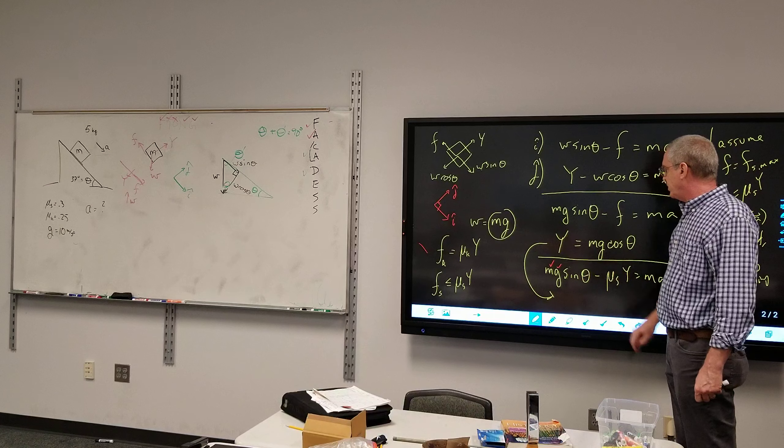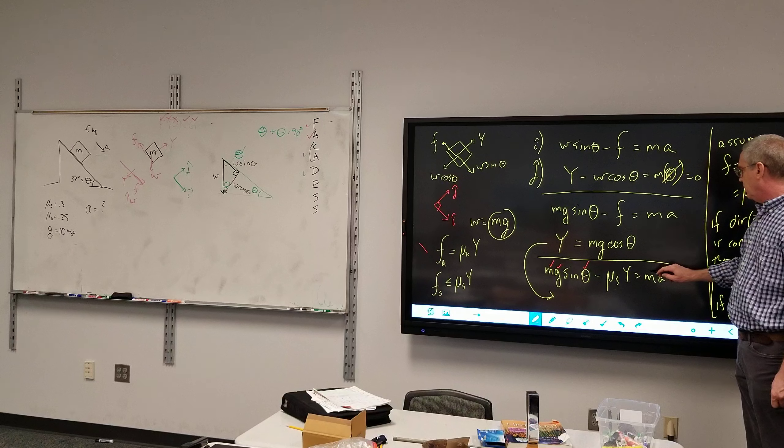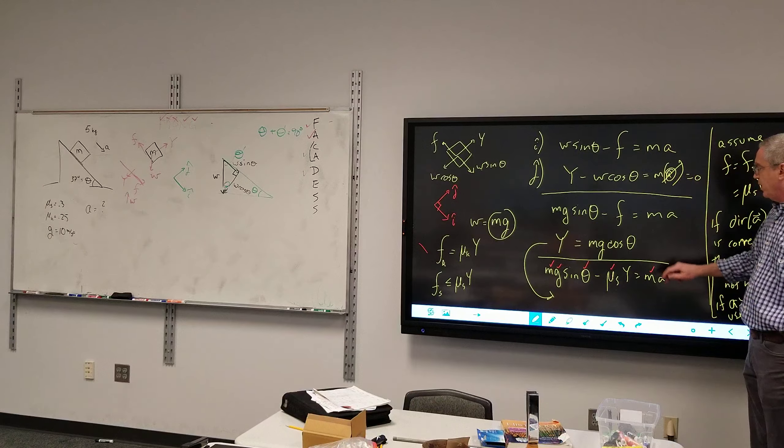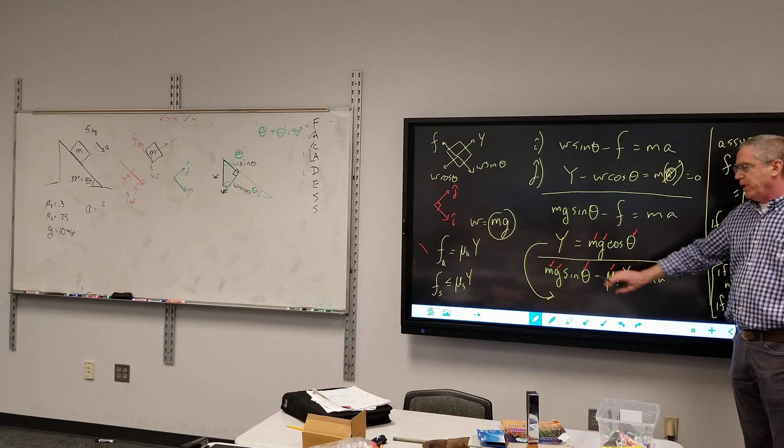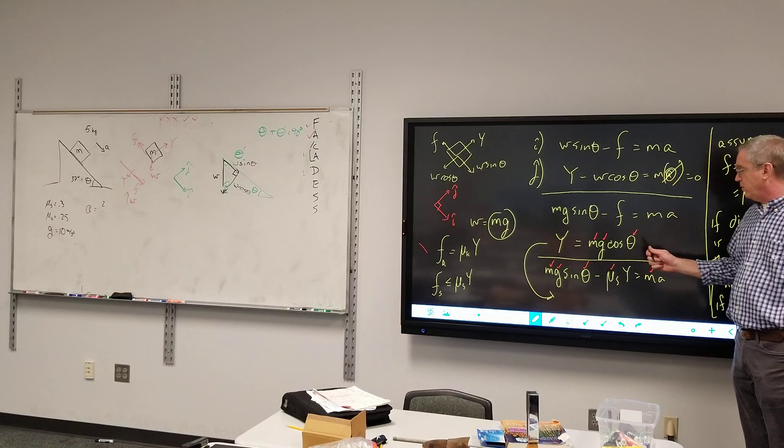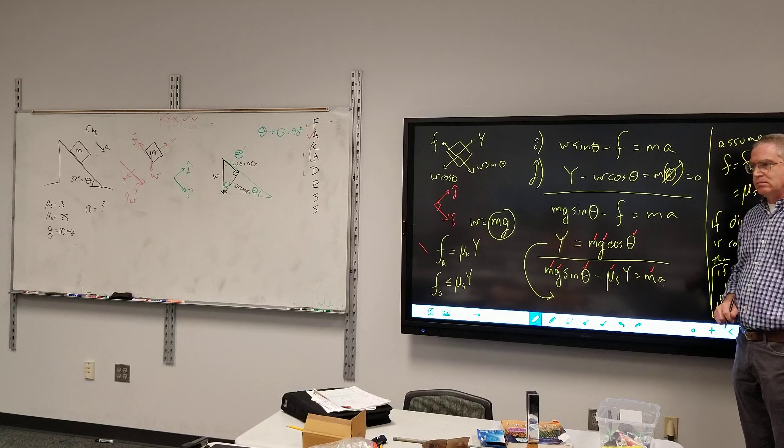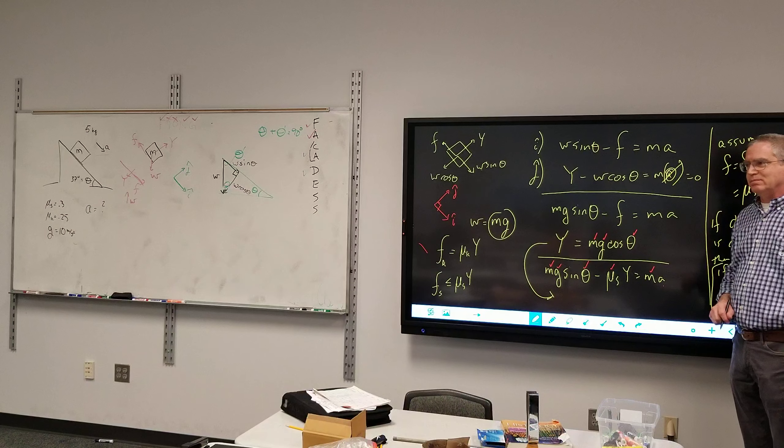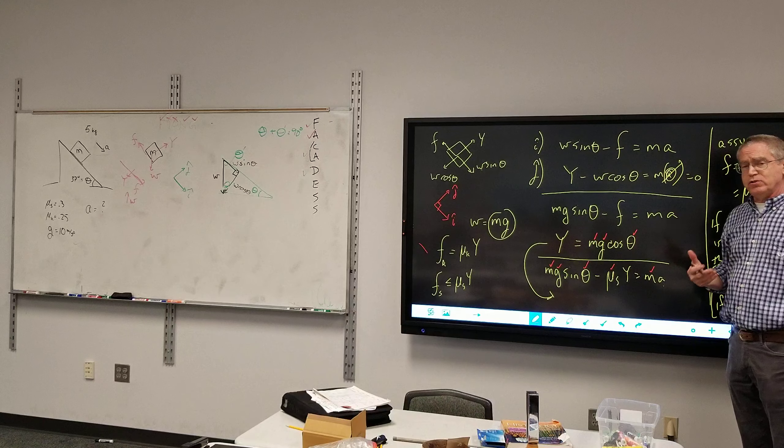All right, so now, when I consider the solving phase, I have two equations. Let's think about what we actually do and do not know. I know the mass, I know acceleration of gravity, I know the angle. I know the mu_s or the mu_k. I know theta, I know g, I know m. These are my two equations. I have two unknowns. I don't know acceleration, I don't know normal force. Two equations, two unknowns.